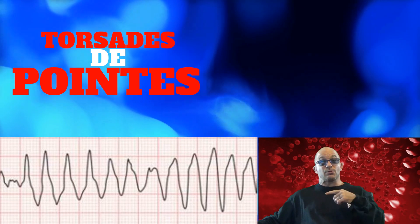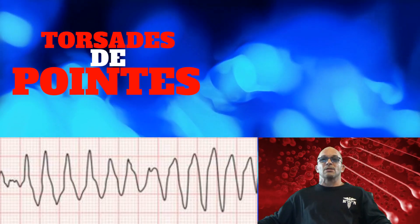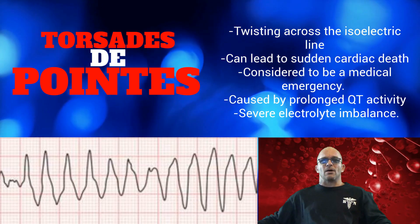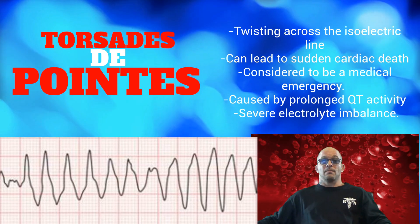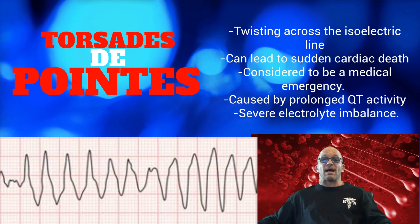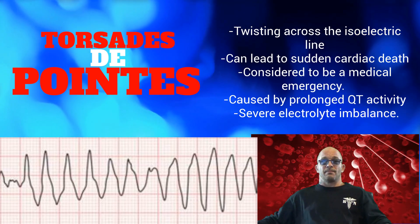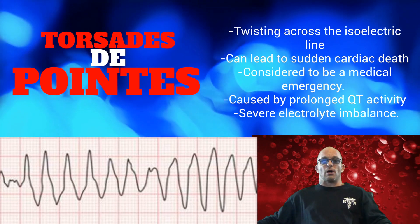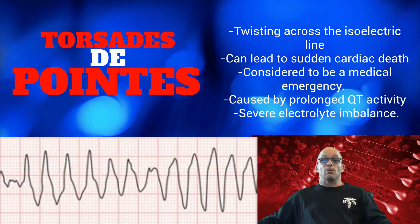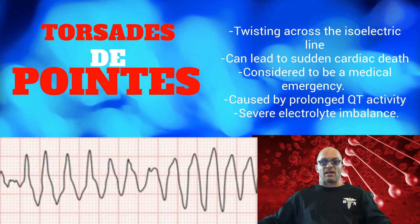This next rhythm is known as torsades de pointes. This is a twisting across the isoelectric line, which can lead to sudden cardiac death and is considered to be a medical emergency. This condition is caused by prolonged QT activity, which is usually caused by a severe electrolyte imbalance.